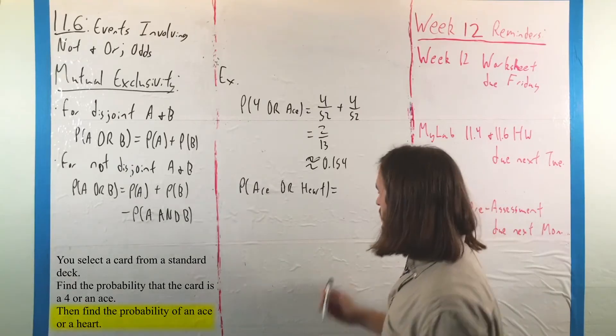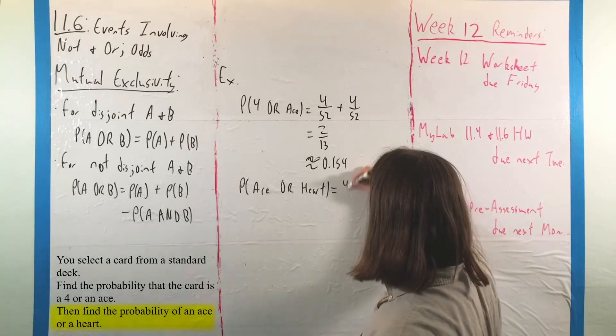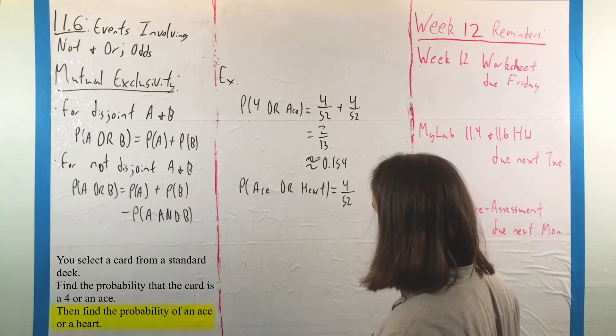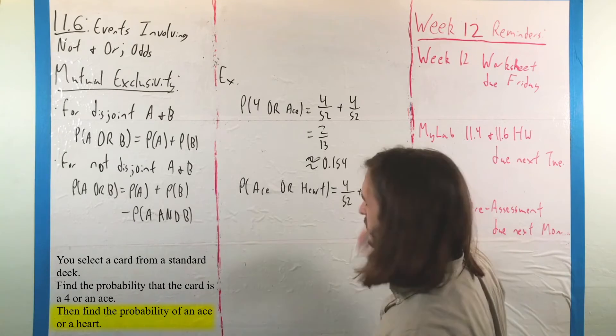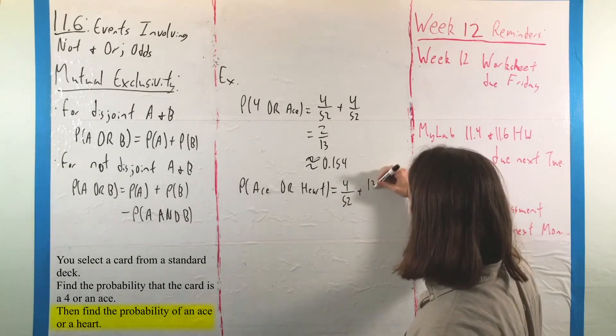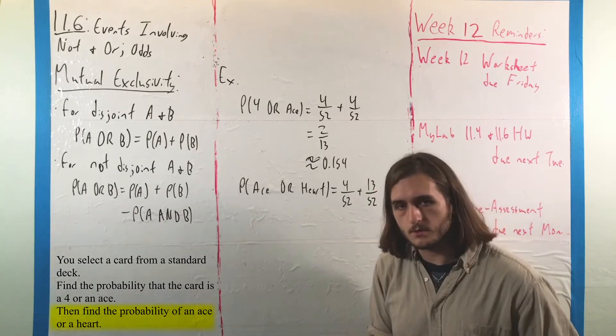Well, there are going to be 4 aces again in this deck of cards. And then, for our hearts, understand that we have 13 out of 52 of those.